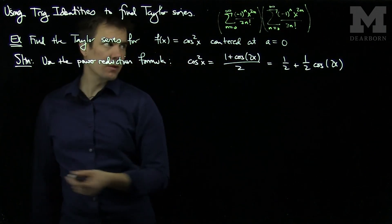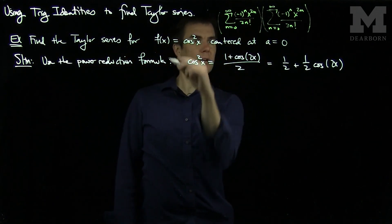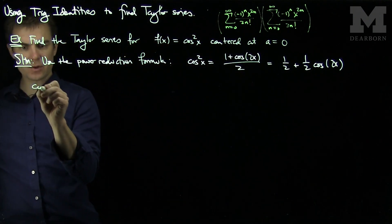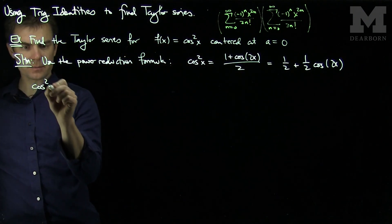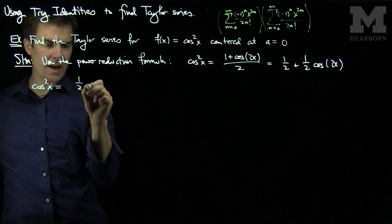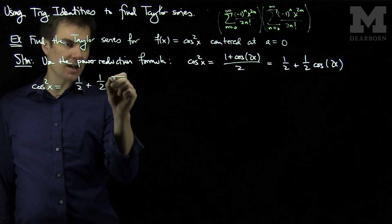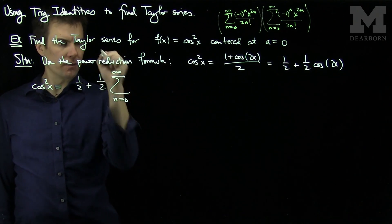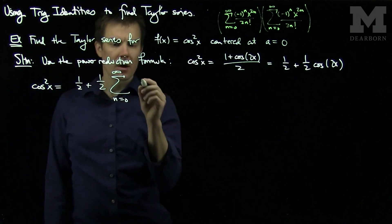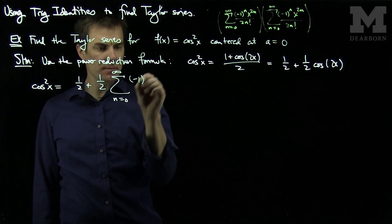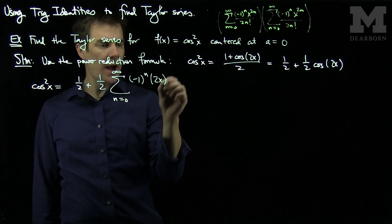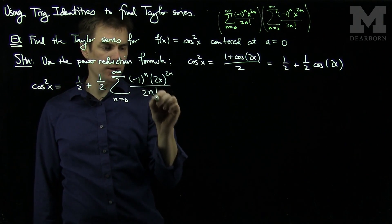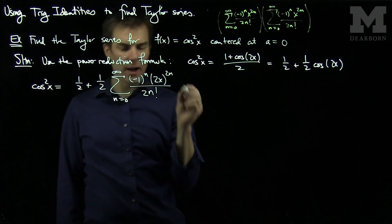Now we know the formula for cos(x). So cos²(x) is therefore 1/2 plus 1/2 times the sum n=0 to infinity of (-1)^n (2x)^(2n) / (2n)!, which we can simplify.